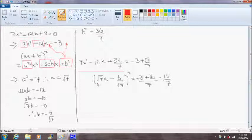So you see here that we've matched root 7 with a and minus 6 on root 7 with our term b.